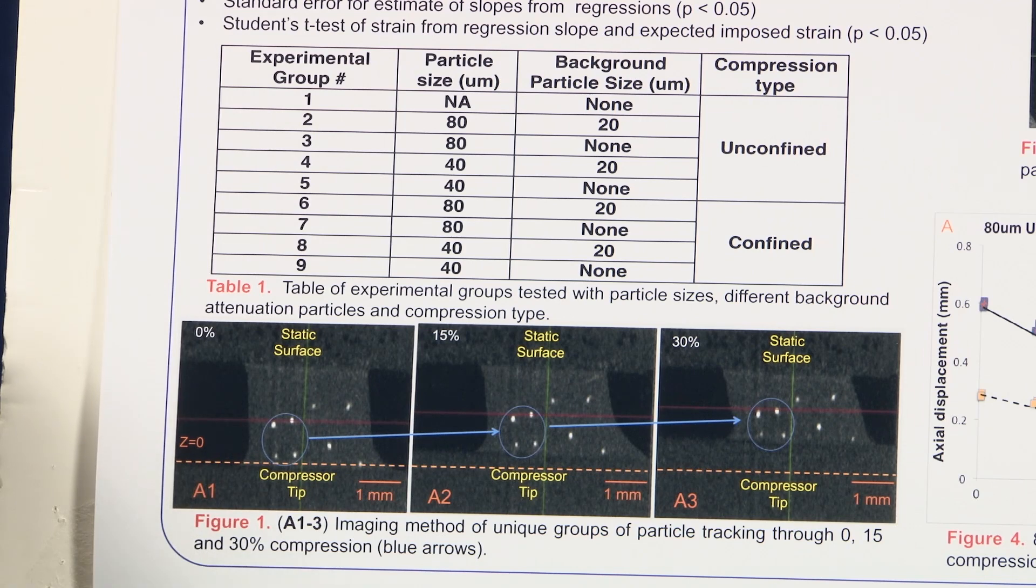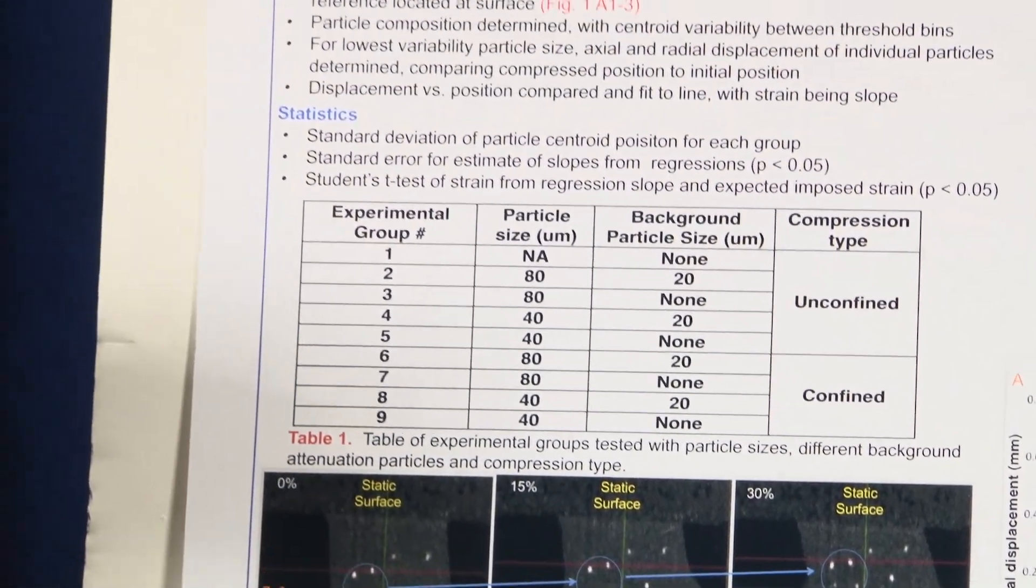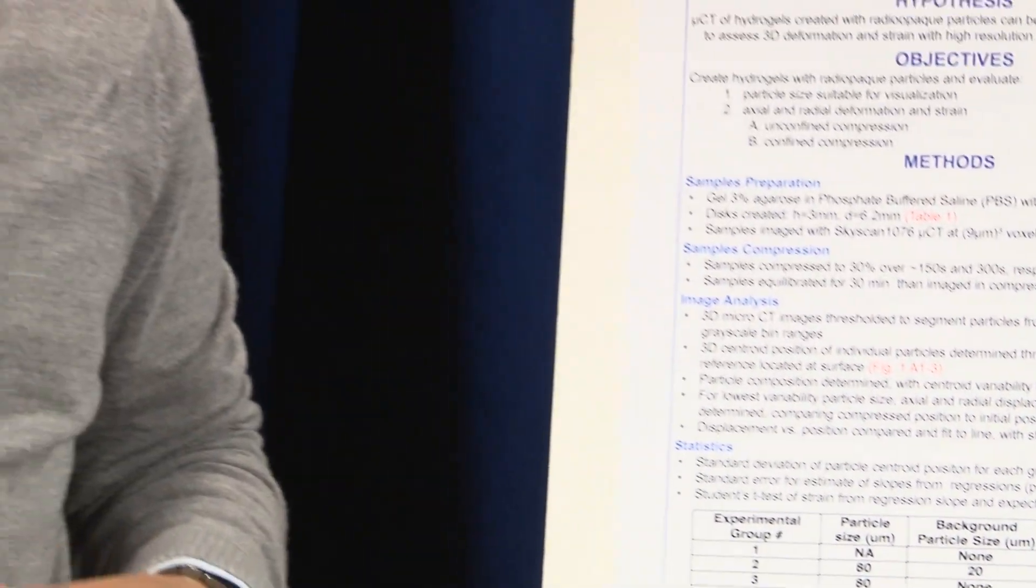During each compression step, we allowed the samples to just lay there in the micro-CT for 30 minutes because we wanted the equilibrium to be reached inside the hydrogel. This would ensure that we had an accurate reading on the strain deformation. When we moved on to our image analysis, we segmented our 3D micro-CT images into different grayscale thresholding ranges. Because of that, we separated the particles from the background, essentially the hydrogel background.